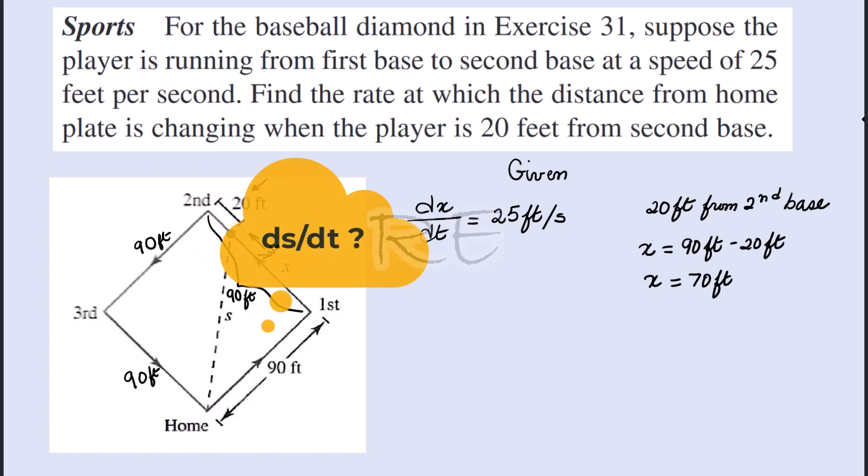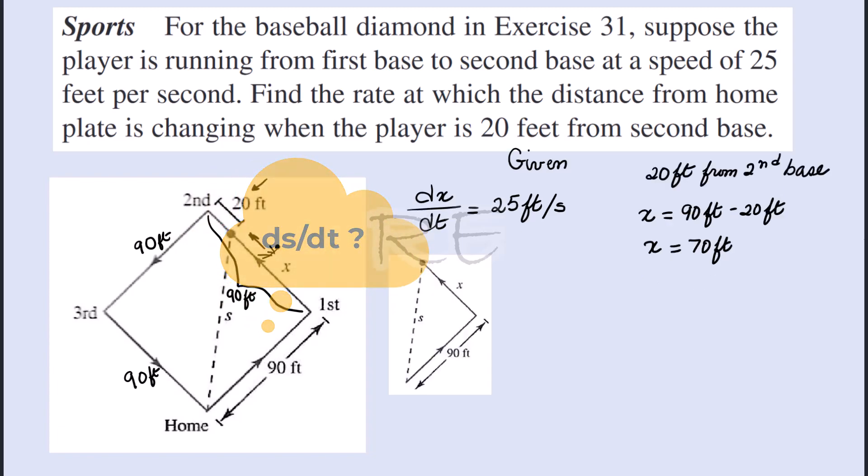Remember, we're looking for ds/dt, which is the rate of change with respect to time of the distance from the player to home plate. Our model is a right triangle with sides 90, 70, and s. Therefore, s² is equal